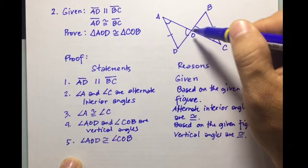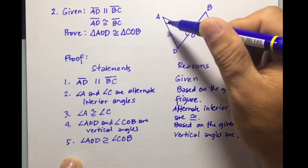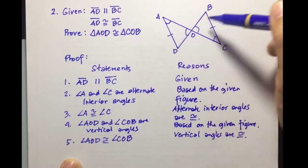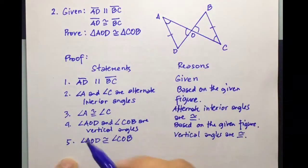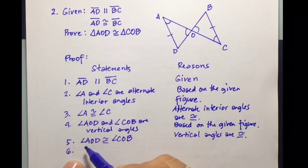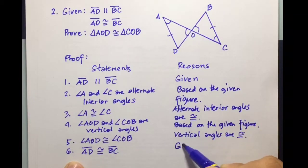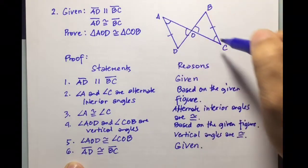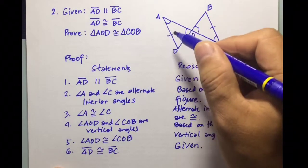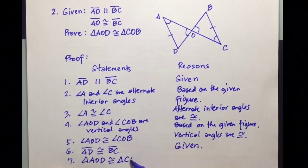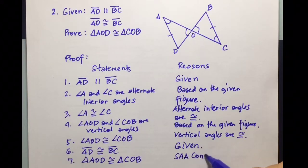We have now proven two pairs of congruent angles, and we have another given — a pair of non-included sides that are also congruent. So we write: line segment A-D is congruent to line segment B-C, with the reason being given. With two pairs of angles and a non-included side, triangle A-O-D is congruent to triangle C-O-B by the SAA congruence postulate.